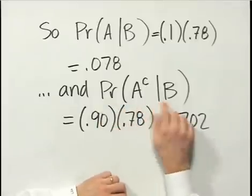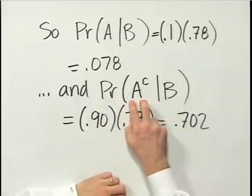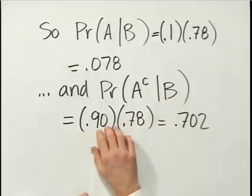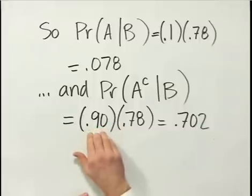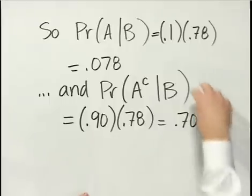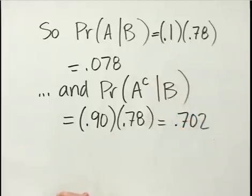The probability of A complement and B — the probability that bond returns are below 6% given that inflation is below 3% — is 0.90 times 0.78, which equals 0.702. Notice that the sum of these joint probabilities equals the marginal probability of event B, which is 78%. No matter how you slice and dice that probability by turning it into conditional probabilities, all the probabilities are only going to sum to 78% in an absolute sense.